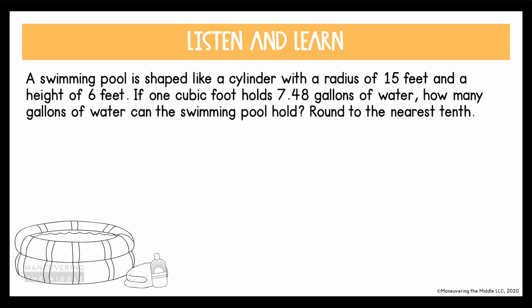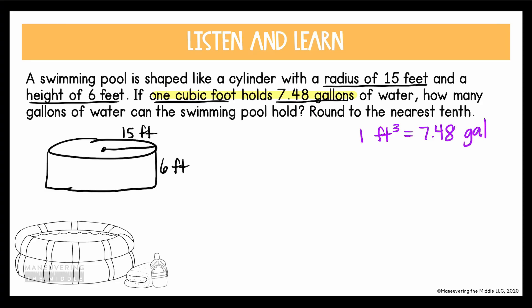Alright, so let's apply volume to a real world situation. Here it says that a swimming pool is shaped like a cylinder, with a radius of 15 feet and a height of 6 feet. If one cubic foot holds 7.48 gallons of water, how many gallons of water can the swimming pool hold? Round to the nearest tenth. I'm gonna start by drawing what they described. So the pool is a cylinder. The radius is 15. And the height is 6 feet. They also gave us a conversion here that I'm gonna write out. They said that one cubic foot, so that's just one foot cubed, is equal or holds 7.48 gallons. If they're asking how many gallons this pool can hold, then we wanna find first the volume of the pool.